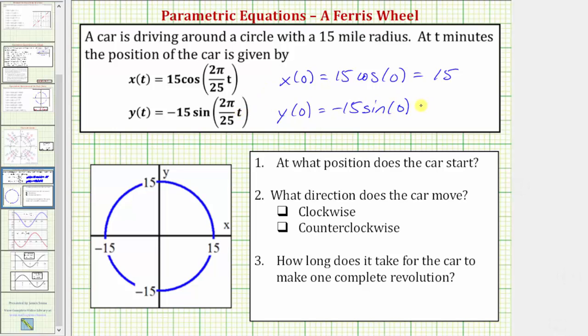which is equal to negative 15 times the sine of, again, this would be zero. Well, sine zero is equal to zero, so the y-coordinate would be zero. So the starting position is the point given by the ordered pair 15 comma zero,